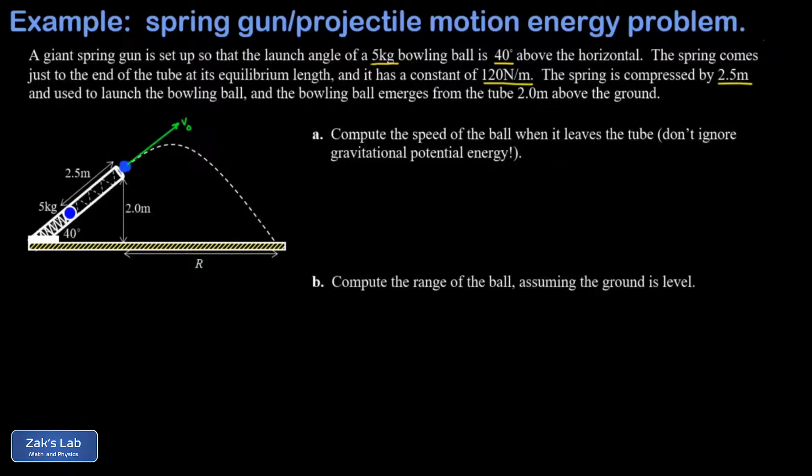I'm going to refer to that as v0. The second part of the problem is, now that I know how fast it's launched out of the tip of this giant spring gun, how far is it going to go before it hits the ground? And that's a projectile motion problem.